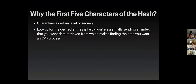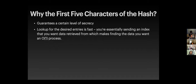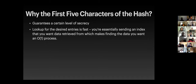Let's dive more into why we use the first five characters of this hash. We've talked about the security aspect — it ensures a certain level of secrecy about the actual user password being tested. But the other benefit is that it allows us to look for the desired data really, really quickly. Whenever we send this hex value, we're essentially sending an index of the data we want to get back — making it an O(1) process.